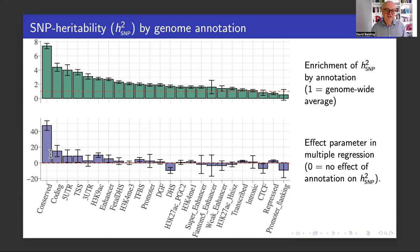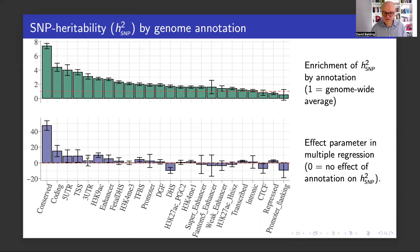What's also interesting are these purple bars. They reflect the contribution of each category after adjusting for the other categories. Conservation is still a very strong indicator of heritability, even after adjusting for other categories. But for example, three prime UTR is no longer significant here.